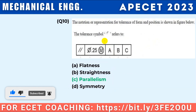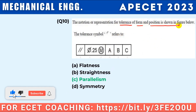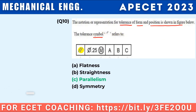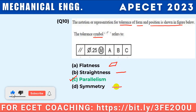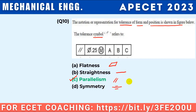The notation or representation of tolerance of form and position is shown in the figure. The tolerance symbol for parallelism is two parallel lines. Flatness has its own symbol. Straightness has its symbol. Symmetry has its symbol. So parallelism — this is parallelism.